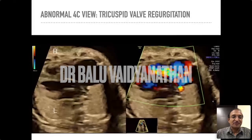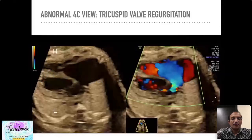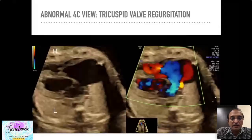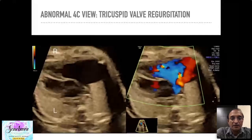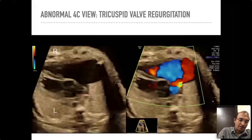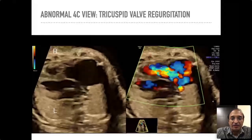This is a picture-in-picture image — grayscale on one side and color on the other. Most of you would call this Ebstein's anomaly with severe tricuspid regurgitation. I just want to pause and suggest that not all tricuspid regurgitation is necessarily Ebstein's. I'm going to bring in one more condition for the sake of differential diagnosis.